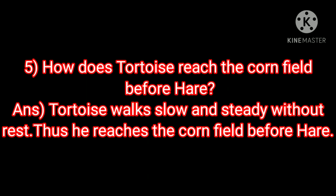Fifth question: How does tortoise reach the cornfield before hare? Tortoise walks slow and steady without rest. Thus, he reaches the cornfield before hare. Hare runs fast, feels tired, and rests under a tree, but the slow and steady tortoise walks without rest and reaches the cornfield before hare. Write down these answers in your notebook.